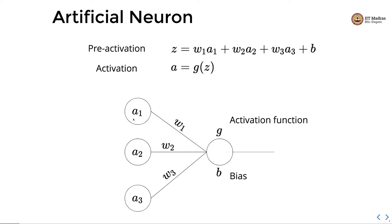A1, A2, and A3 are inputs to this neuron, and these inputs are combined through weights on the edges connecting the inputs to the neuron. A1 is combined with weight W1, A2 with weight W2, and A3 with weight W3. So Z, the intermediate output or output of linear combination, equals W1·A1 + W2·A2 + W3·A3 + B, where B is the bias. The resulting linear combination Z is then passed through an activation function G, which produces the activation from the linear combination of the inputs.